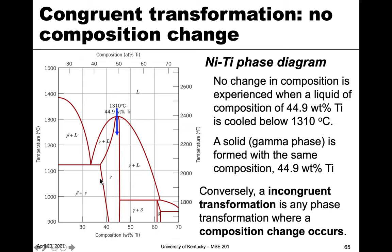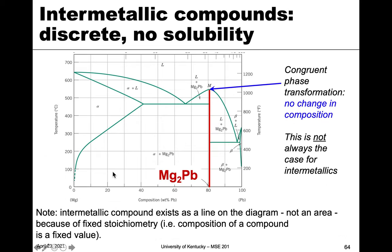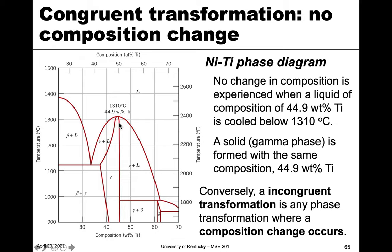Another thing about this diagram: we have an intermediate phase gamma here, because it's in the middle of the diagram. But it also has area, unlike the line compound in the previous example. What this tells us is that we can be at 50 atomic percent, but it also has some solubility — we can add a little bit more nickel or a little bit more titanium and still maintain the same phase. So there's a little flexibility in the structure; the stoichiometry doesn't have to be exactly right.